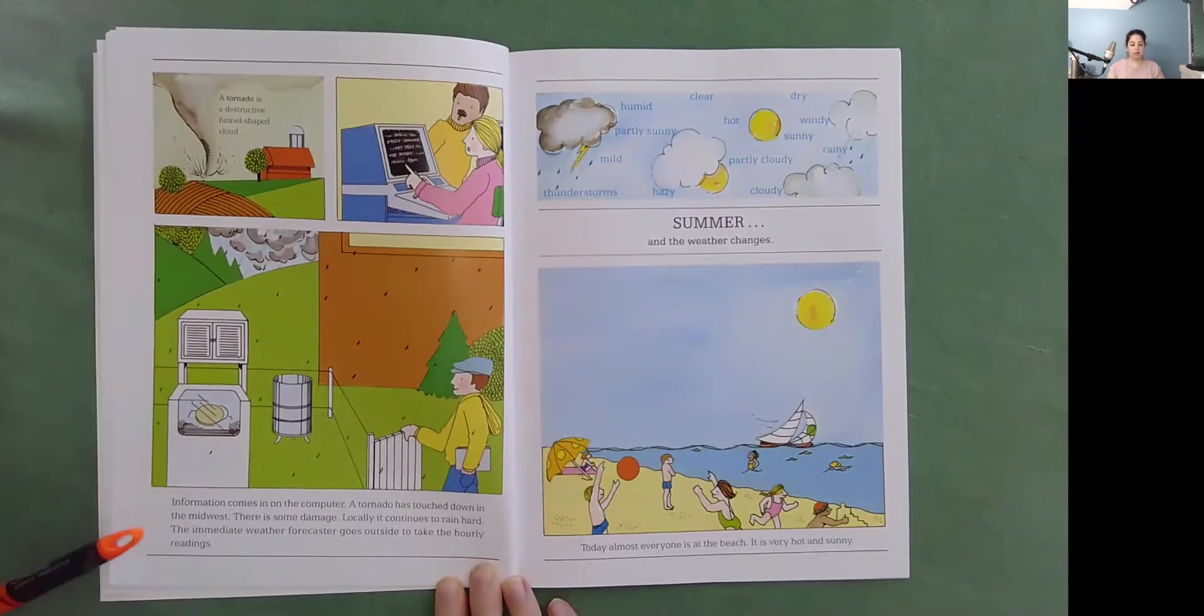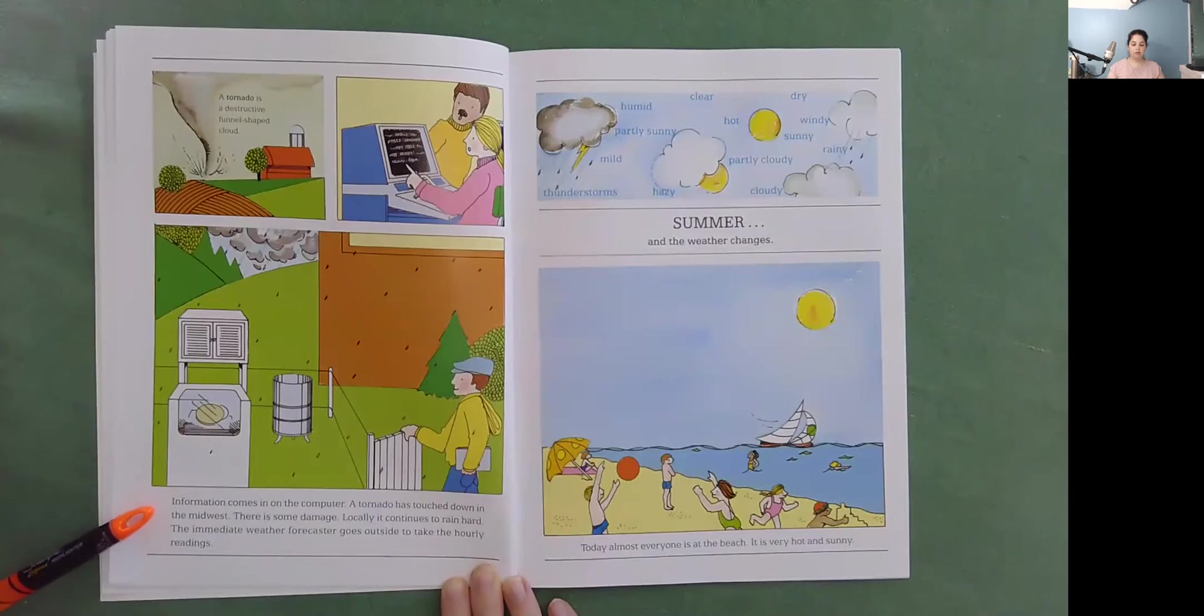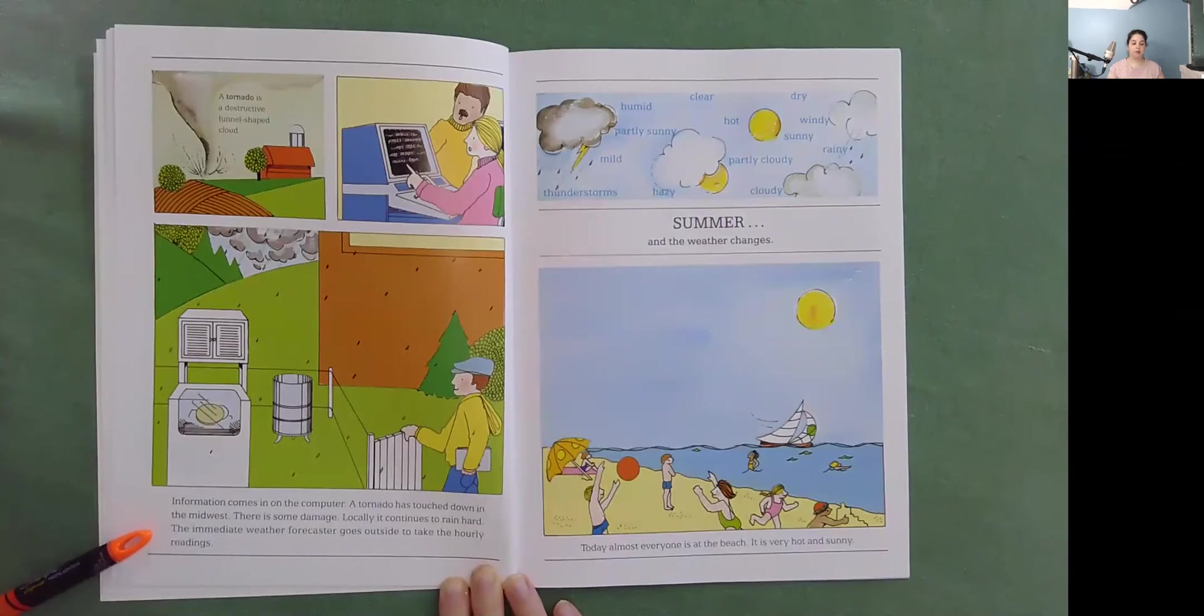A tornado has touched down in the midwest. There is some damage. Locally, it continues to rain hard. The immediate weather forecaster goes outside to take the hourly readings.